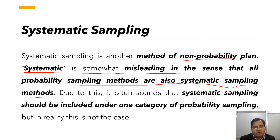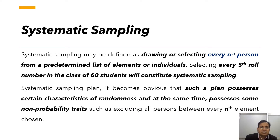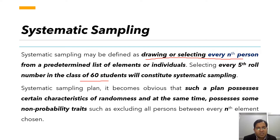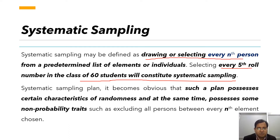Systematic sampling falls under non-probability because we select individuals by drawing every nth number from a list. For example, suppose we have a list of 60 students. We arrange them in a particular order and then select every fifth individual from that list.